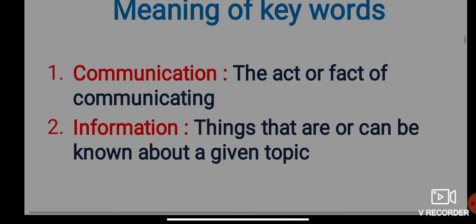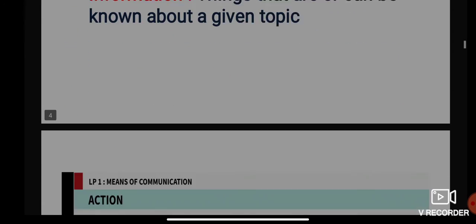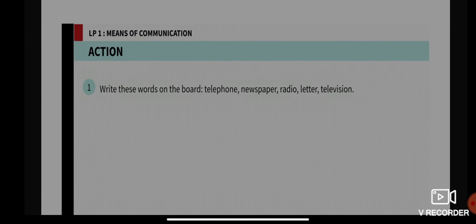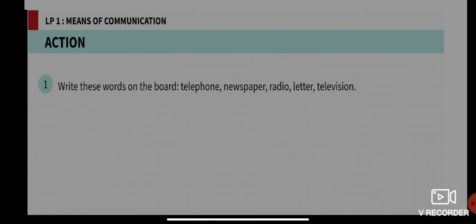Let us learn the meaning of the keywords. What is communication and what is information? Communication, in simple terms, means the act of communicating — that is known as communication. Information means things that are or can be known about a given topic — those are known as information. That is what we get from someone.